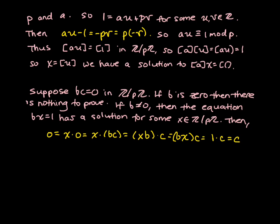So we've showed that either b equals 0 or c equals 0. And that's what we wanted.